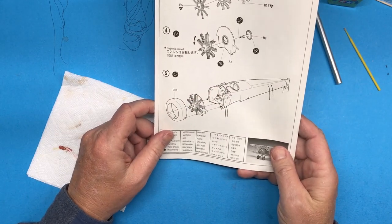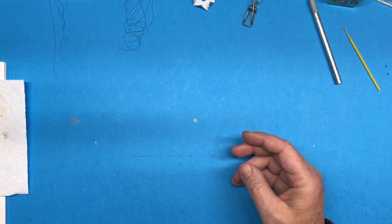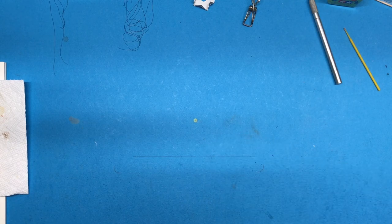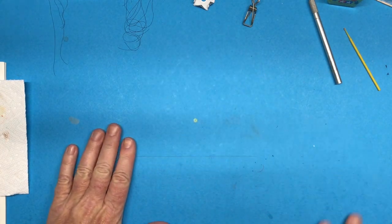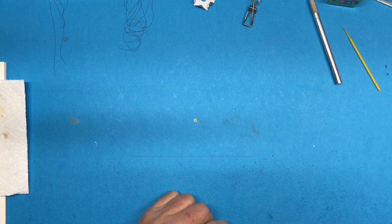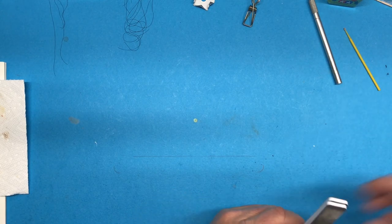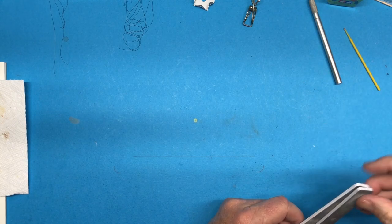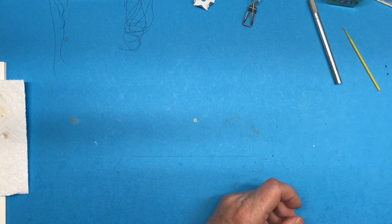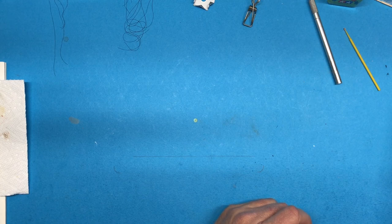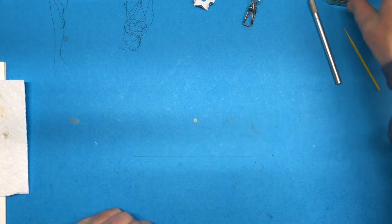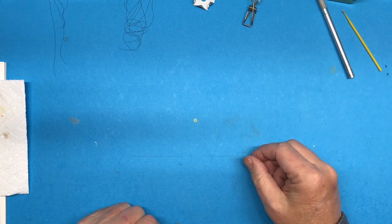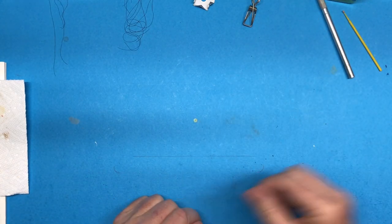That ends part number two of the Academy 1:32 scale Sopwith Camel F1. If you like this video, if you want to see more of my builds, why don't you subscribe. If you want to get notifications just hit the notification button. Have any questions, comments, hints, tips, concerns, anything like that about this kit, or if you just want to blab, use the comments section down below and I'll get back to you as quick as I can. Thanks for watching Plastic Models by a Regular Dude and I will see you all later.